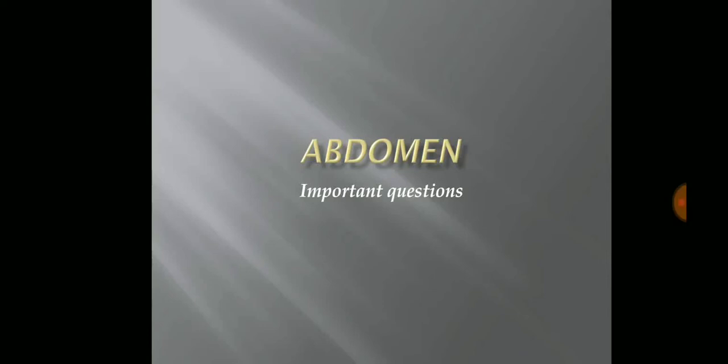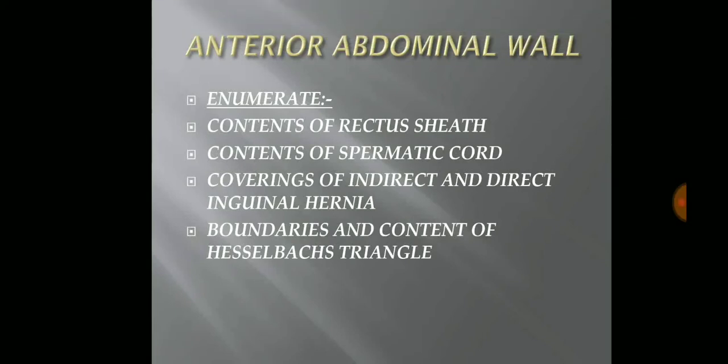Moving to the first chapter, that is the anterior abdominal wall. The enumerate questions asked from this chapter are: contents of the rectus sheath, contents of the spermatic cord — this is the most important question — coverings of the indirect and direct inguinal hernia — this is also important — and boundaries and contents of Hesselbach's triangle, which is a less important question. You mainly have to focus on the contents of the spermatic cord and the coverings of the hernia.